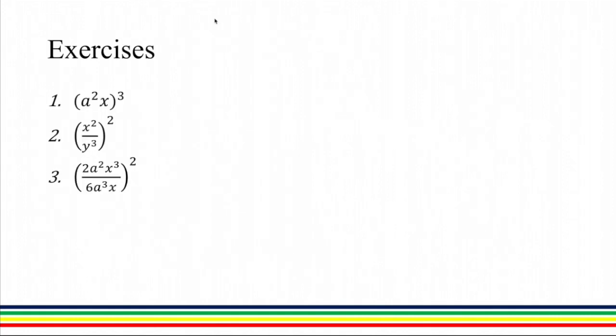Let us solve these exercises and I will be solving the third one. I'll just rewrite it here. We have 2a squared x cubed over 6a cubed times x, and this is raised to 2. We have to use all the index laws in simplifying this expression.